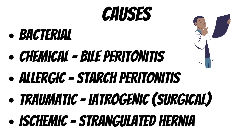The causes of peritonitis can be bacterial. Chemical causes, for example bile peritonitis, occur when there is spillage of bile into the peritoneal cavity causing inflammation. Allergic causes include starch peritonitis, where exposure to starch powder present in the latex gloves of the doctor while operating in the peritoneal cavity can trigger a reaction.